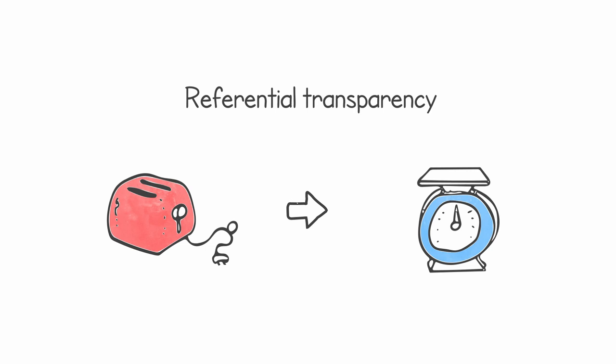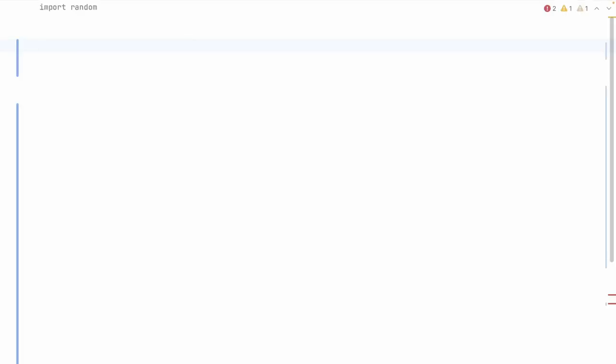The second principle is to write your functions so they are referentially transparent. Now this sounds very complicated but in fact it is quite simple. It means that you can replace the body of your function with a constant without altering the behavior of your program, for the same input of that function. As an effect of this, referential transparency means calling the same function with the same exact inputs will always return the same outputs.